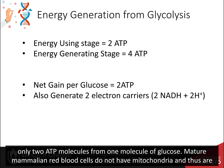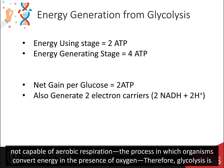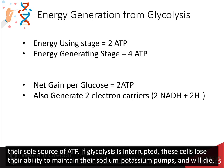Mature mammalian red blood cells do not have mitochondria and thus are not capable of aerobic respiration — the process in which organisms convert energy in the presence of oxygen. Therefore, glycolysis is their sole source of ATP. If glycolysis is interrupted, these cells lose their ability to maintain their sodium-potassium pumps and will die.